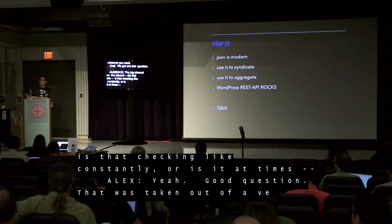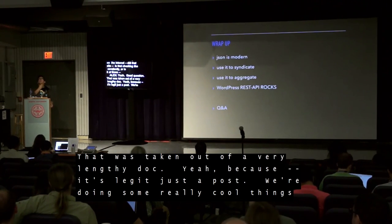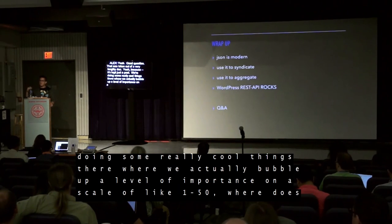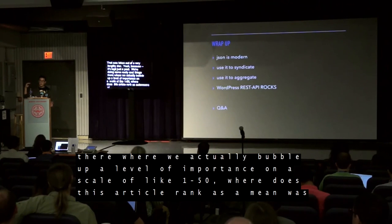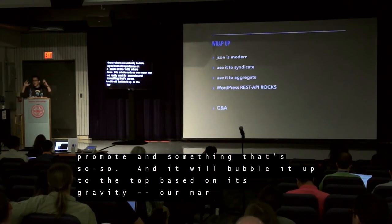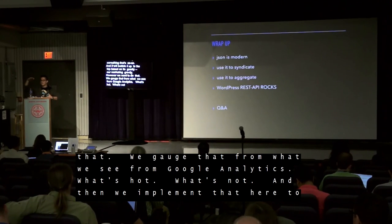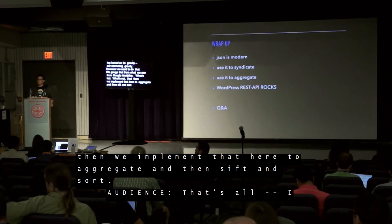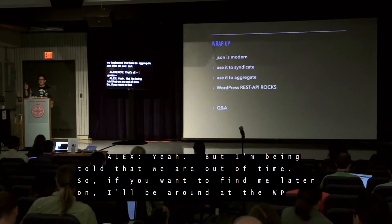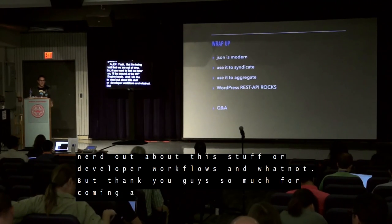That code snippet was taken from a very lengthy actual post. We're doing some cool things there — we actually bubble up a level of importance on a scale of 1 to 50, where articles rank based on how much we want to promote them. It bubbles to the top based on gravity, our marketing gravity. We gauge that by Google Analytics — what's hot, what's not — and implement that here to aggregate, sift, and sort. I'm being told we're out of time. Find me at the WP Engine booth — I love nerding out about developer workflows. Thank you for coming and have an awesome WordCamp Boston!